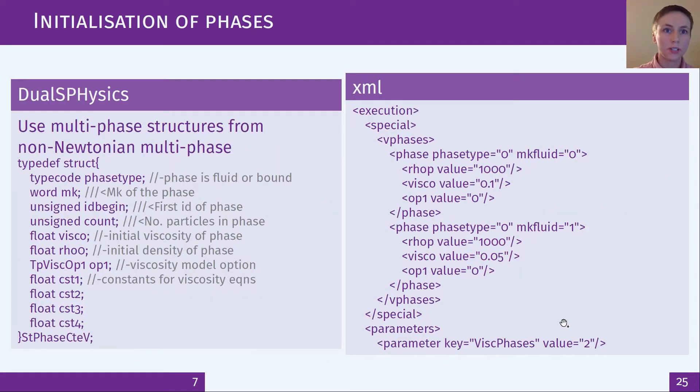In the initialization of phases this is based on the non-Newtonian multi-phase code. Here's a multi-phase structure which stores the phase properties including density, viscosity, viscosity model and parameters for that model. On the right we're specifying the phase properties in an xml case file in the special section for a corresponding mk fluid. And here are the properties that are specified. Also there's a flag in the parameters telling us to use the viscosity phases option.